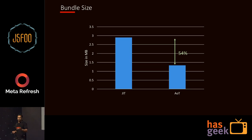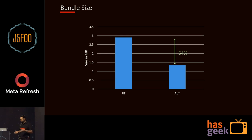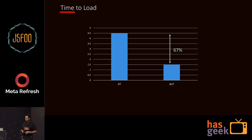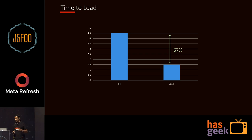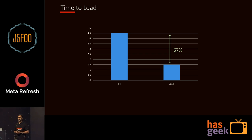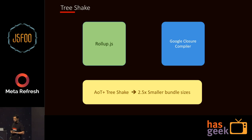When we applied AOT, the bundle size moved from about 2.9 MB down to about 1.5 MB — about a 54% reduction. In terms of first paint, we got an improvement of about 67%: it was taking about 4 to 4.5 seconds, and we brought it down to about 1.5 seconds. That's a significant improvement, and we were pretty happy with that.